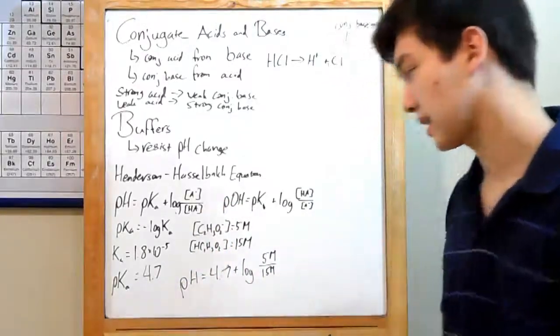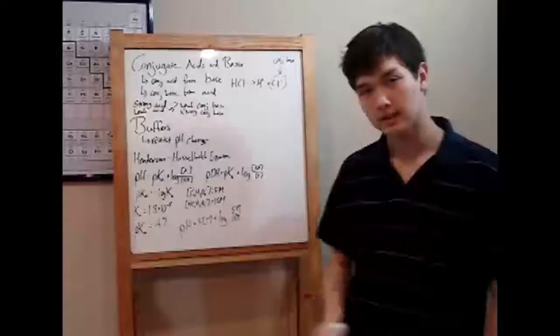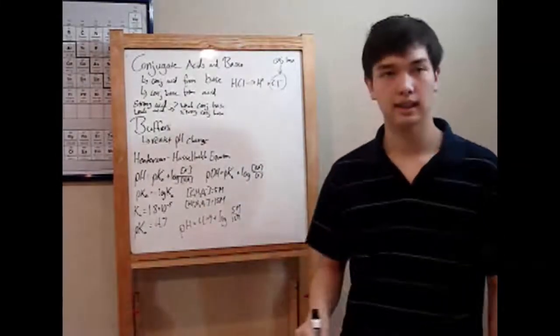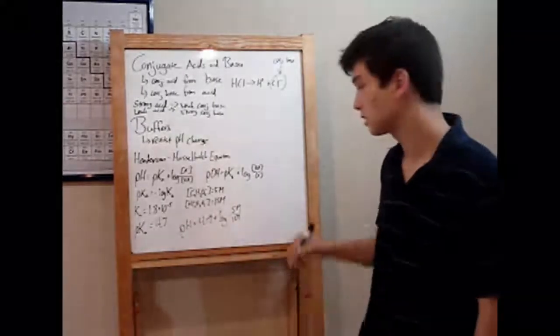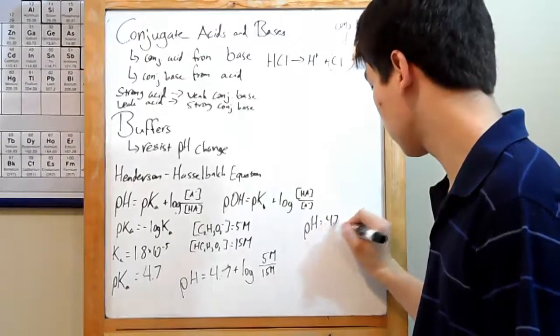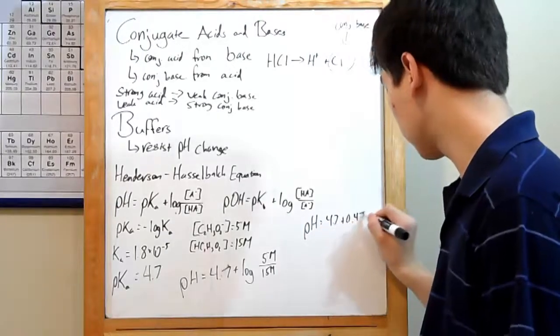So 5 over 15 is just 1 over 3, or a third. Punch the log of that into your calculator, and you should get about 0.477. So pH is 4.7, plus 0.477.